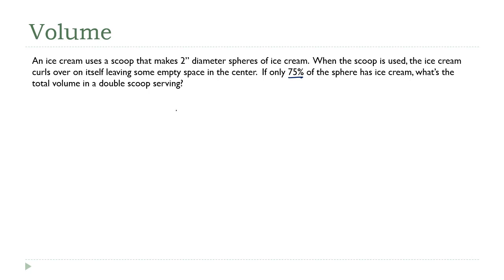Well, I know that the volume of a sphere is four-thirds pi r cubed, and we're talking about two spheres because it's a double scoop, so we'll double that, but I only want 75% of it, so we'll multiply this by 0.75.